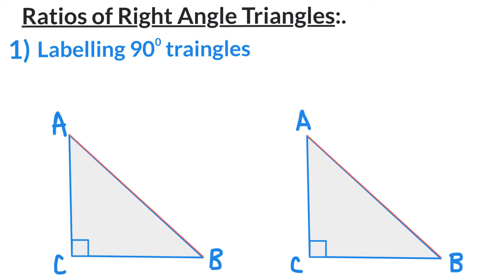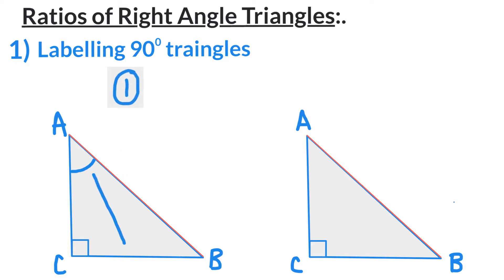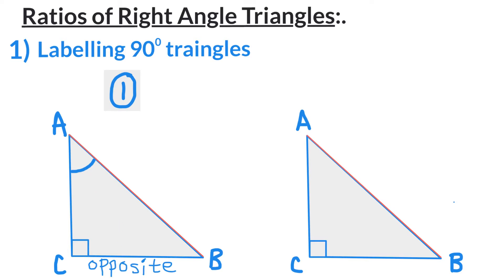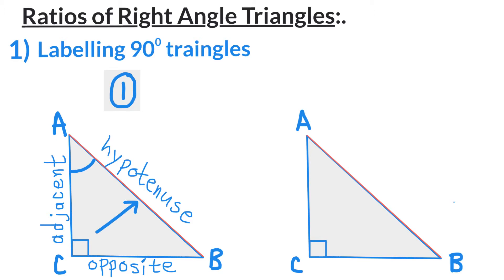Let's first look at triangle number one according to angle A. Labeling the sides according to angle A: opposite of angle A we call it the opposite side. Next to angle A we call it the adjacent side, and as we know, the hypotenuse is always across from angle C.